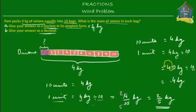I really recommend that you go watch the lesson on how to divide a decimal number by 10s, hundreds and thousands. After shifting the decimal point one place to the left, what you get is 0.4 kilograms. So 0.4 kg is the answer to part B. The mass of onions in each bag is either 2 fifths of a kilogram or 0.4 kilograms.